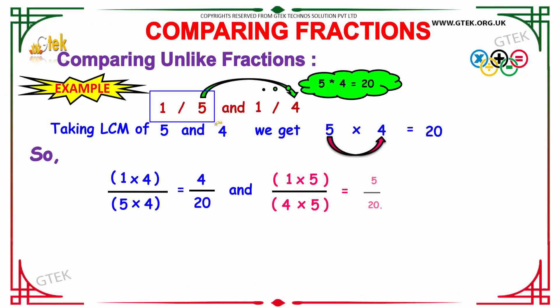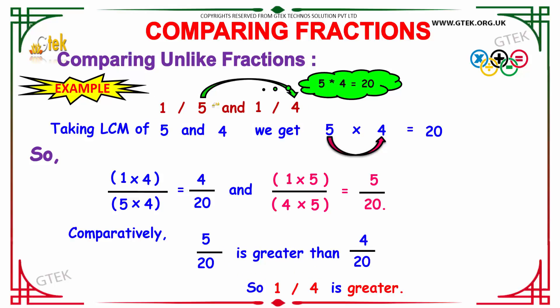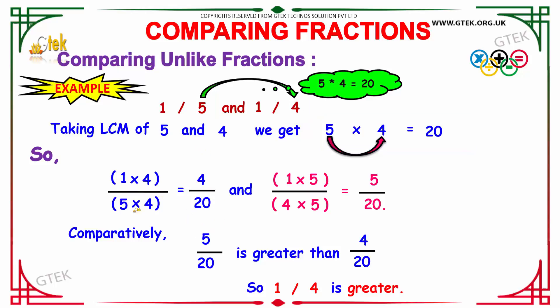Here is our example: the first term is 1/5 and the second term is 1/4. As we discussed for unlike fractions, we must first make these denominators the same to get like fractions. In order to do that, we take the LCM of 5 and 4. The LCM of 5 and 4 is 20. To make the denominator 20, we multiply 4 in both the numerator and denominator of 1/5, giving us 4/20.